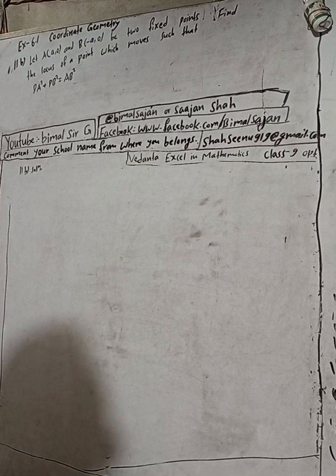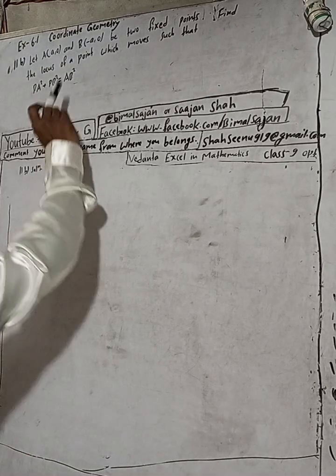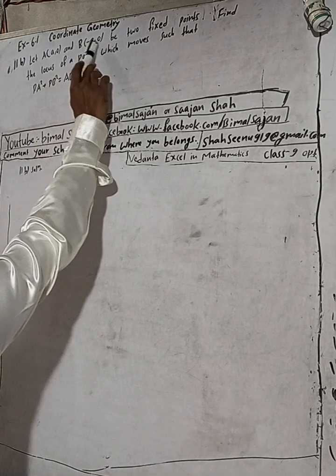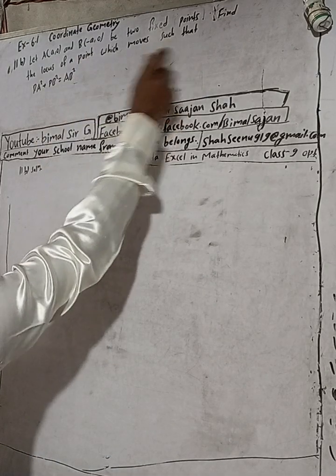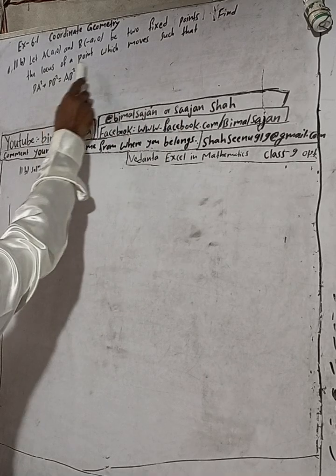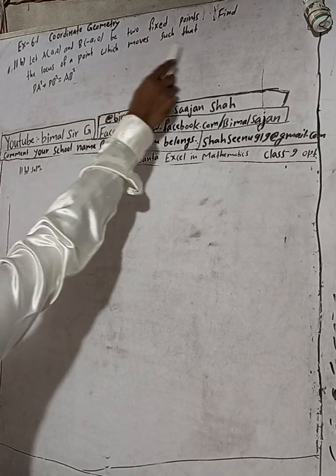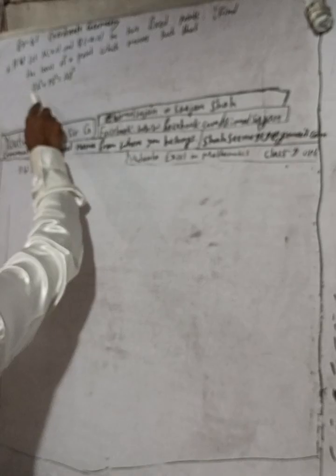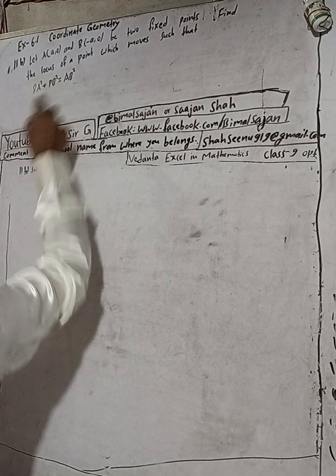The question is: let A(a, 0) and B(-a, 0) be two fixed points. Find the locus of a point P which moves such that PA² + PB² = AB².